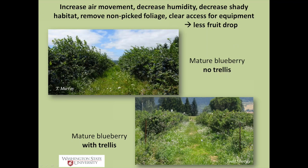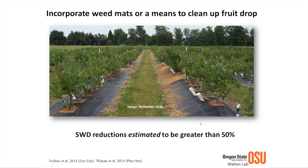I would recommend mowing the rows. Consider incorporating weed mats, particularly in a blueberry system. These black weed mats heat up and kill eggs and young larvae from fallen fruit. Perhaps raking, crushing, or desiccating unwanted berries as well. Work done in the Walton lab estimated greater than 50 percent reductions in SWD just by installing weed mats or implementing other fruit drop cleanup methods.